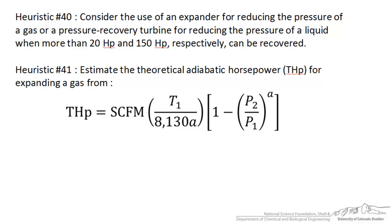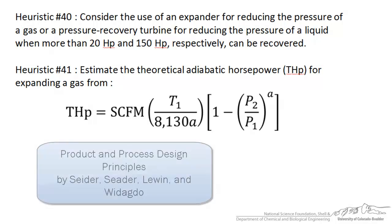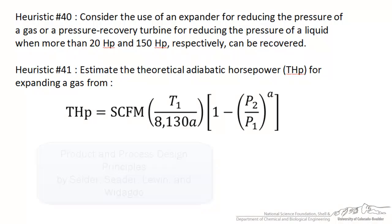We're going to look at two in particular: heuristics 40 and 41 from the Seider textbook on product and process design principles. Heuristic 40 states that we would consider the use of an expander for reducing the pressure of a gas or, in the case of a liquid, a pressure recovery turbine. But only if we can get 20 horsepower out for the expander or 150 horsepower out for the pressure recovery turbine.